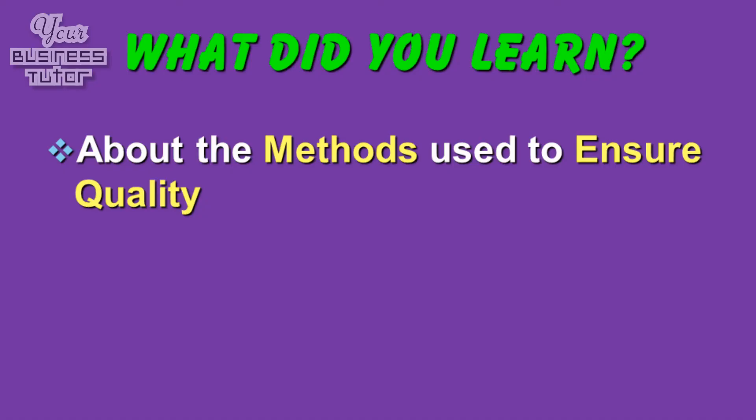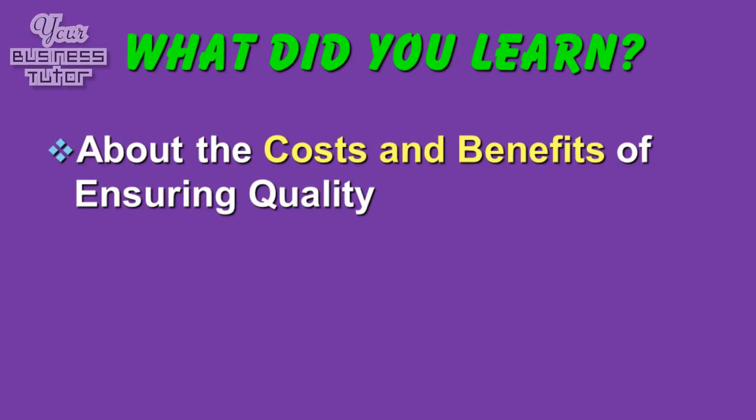So what did we learn in this presentation? Well, first of all we found out what a quality product is, then we went on to investigate the methods used to ensure quality, and then finally we explored the costs and benefits of ensuring quality. There is no doubt that there is room in the market for businesses that focus on making and selling quality products. However, to believe that quality in itself will sell a product would be a mistake. This is why so many organizations that offer quality products focus on the branding and image of their product as well, as a way of creating and maintaining customer interest.